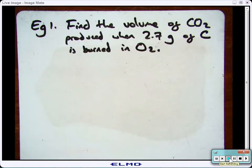For example, if you had this question which said, find the volume of carbon dioxide produced when 2.7 grams of carbon is burnt completely in oxygen. The first thing you'd need to do is write out your balanced symbol equation, which in this case is nice and simple.